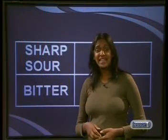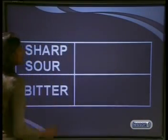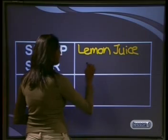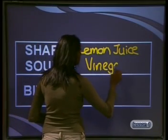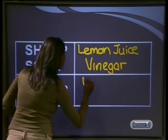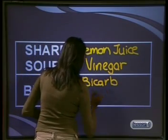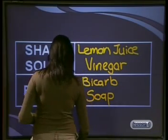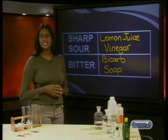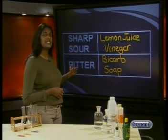It's important to draw up a table to record your results, and use only a small sample of about half a teaspoon. Remember to rinse your mouth out with water after each test. Which substances tasted sharp and sour? Lemon juice and vinegar. And which substances tasted bitter? Water, bicarb, and soap.